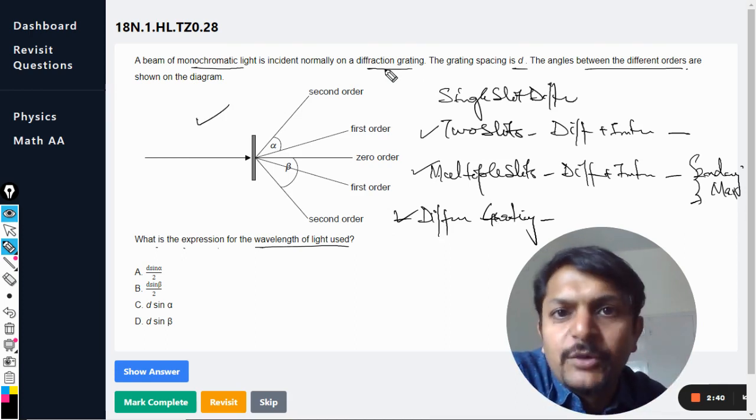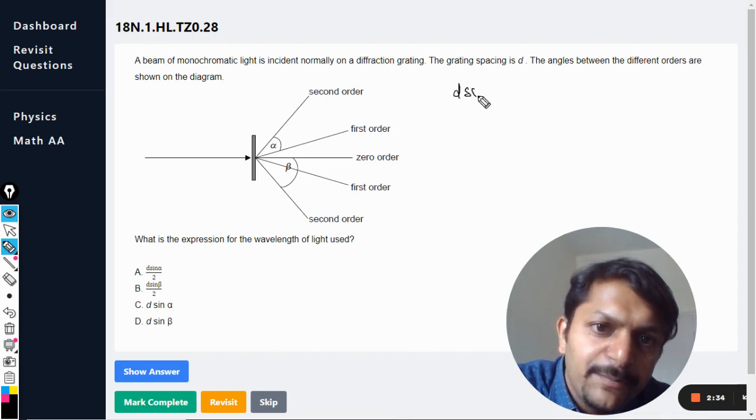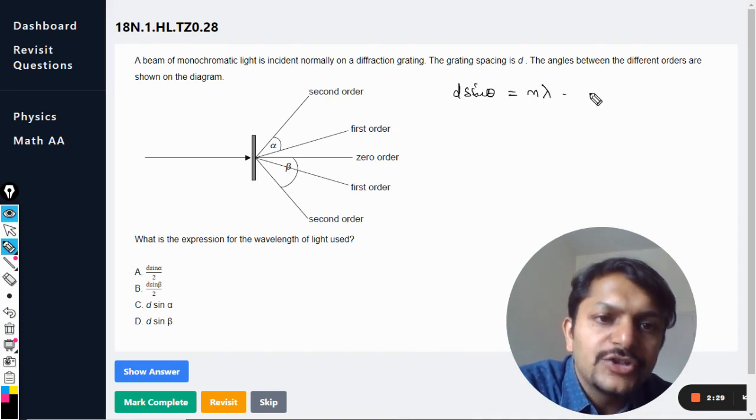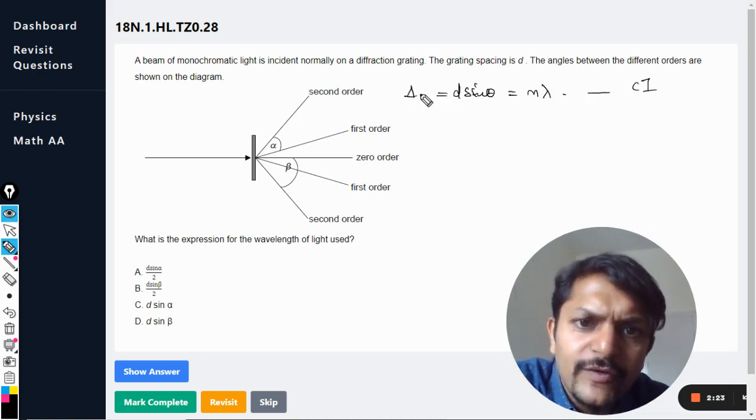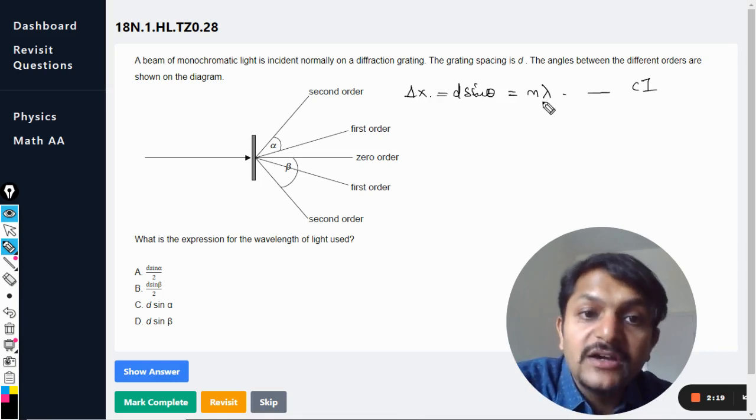So even in this case, in the diffraction grating, we are only going to use the interference formulas. And how are we going to do that? So the interference is like, the path difference d sin theta is equal to n lambda. So this is constructive interference we are talking about. Simple. This is about the path difference.